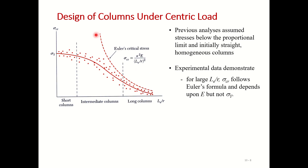Our previous analysis — the Euler curve — assumed stresses below the proportional limit, initially straight and homogeneous columns. However, in real materials there are defects; they are not completely homogeneous. There are manufacturing defects, built-in voids, or cavities in materials, and the boundary conditions are not ideal. When we test them practically, the experimental data shows a scatter — a spread of data points.